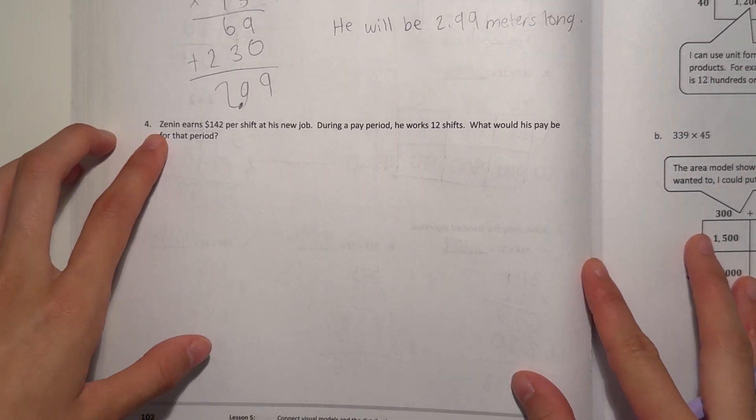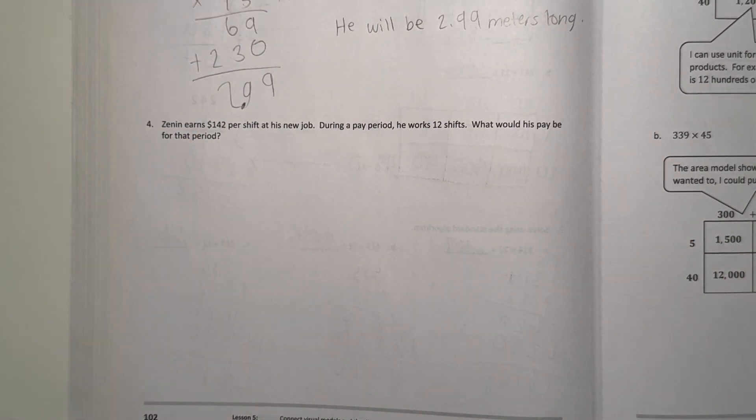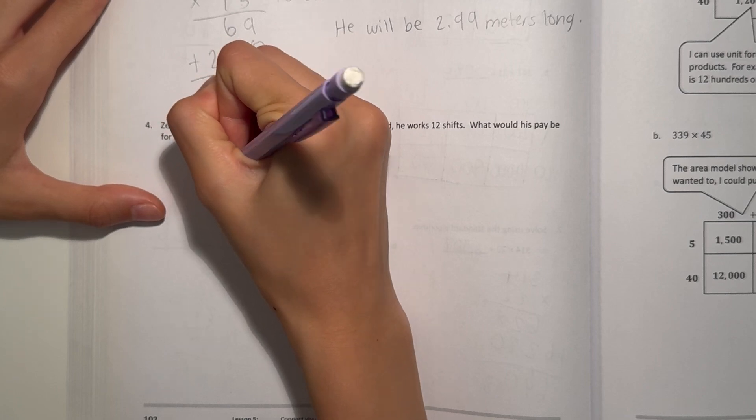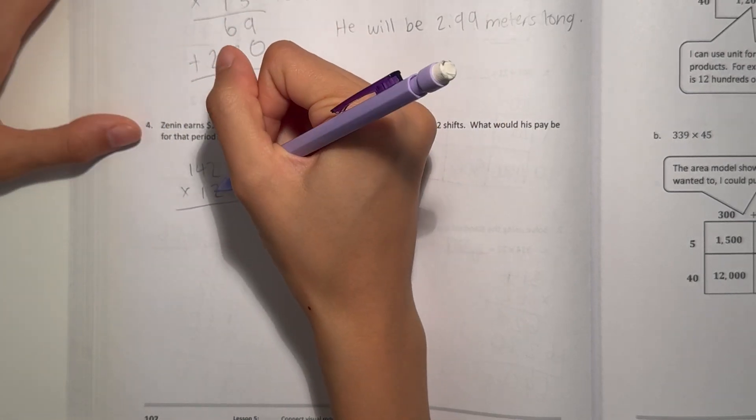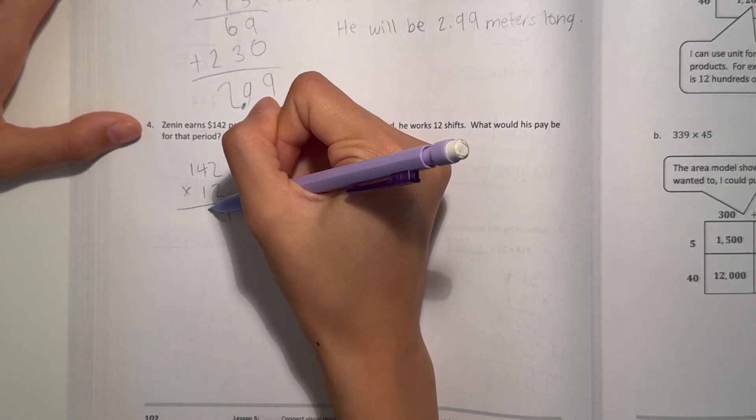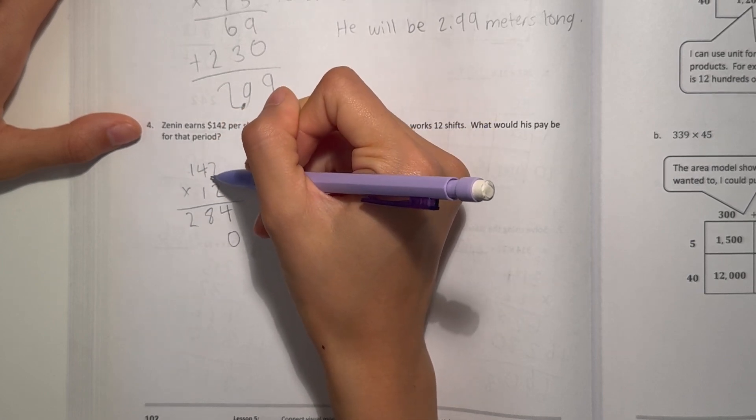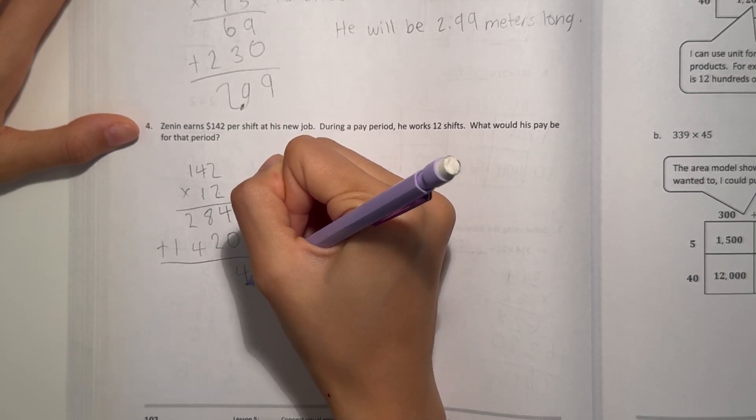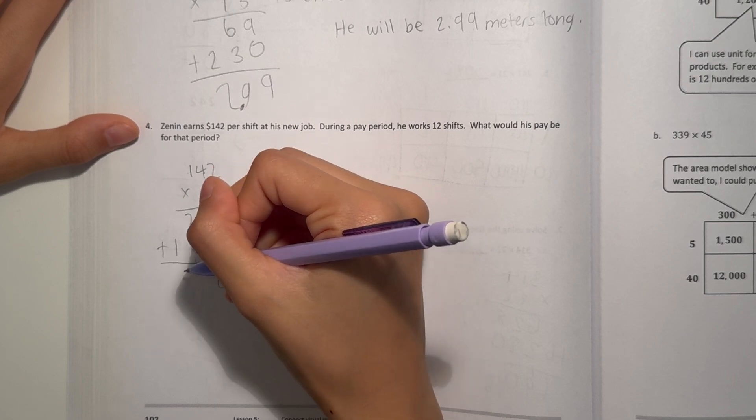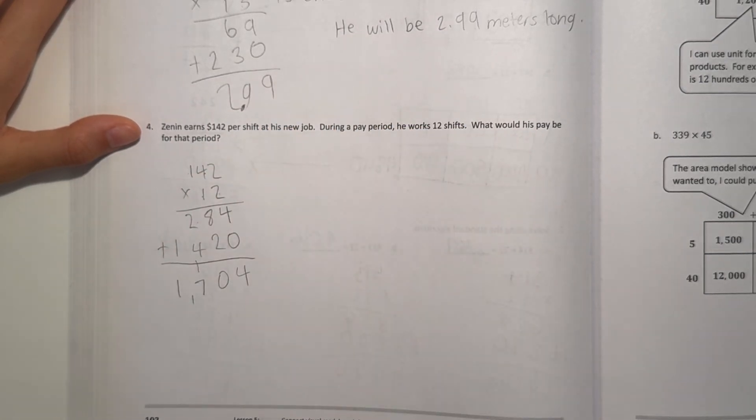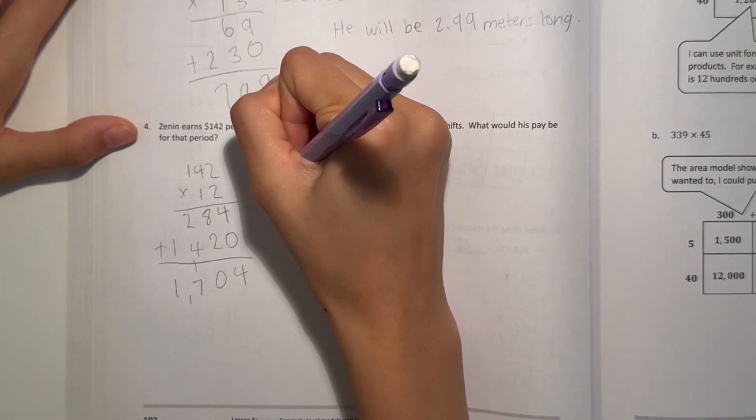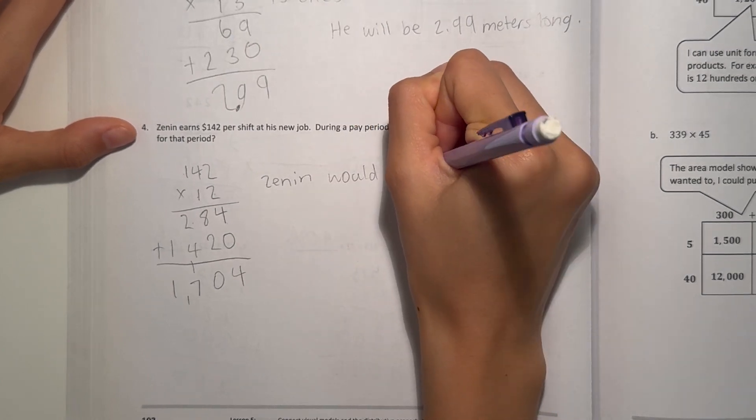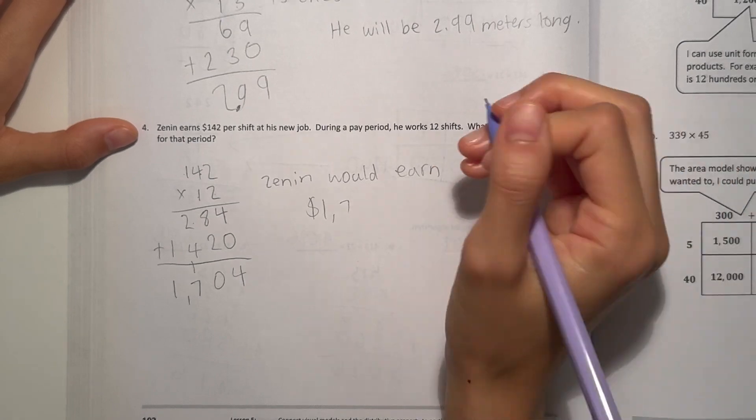Number 4. Zenon earns $142 per shift at his new job. During a pay period, he works 12 shifts. What would his pay be for that period? 142 times 12. 2 times 2 is 4. 4 times 2 is 8. And 1 times 2 is 2. Now add a 0. 2 times 1 is 2. 4 times 1 is 4. 1 times 1 is 1. Let's add. 4 plus 0 is 4. 8 plus 2 is 10. 2 plus 4 is 6. Plus 1 is 7. And 1 is just 1. 1,704. Zenon would earn $1,704.